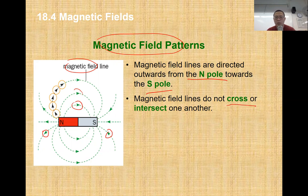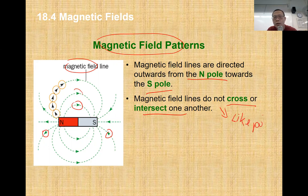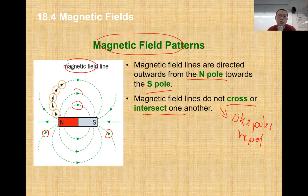We also make sure that the field line doesn't cross or intersect each other. One of the primary reasons it doesn't intersect is because the field lines represent where the North Pole or South Pole effects are being felt. The common understanding is that like poles repel. Because each field line represents a pole - from North Pole to South Pole - you'll find that like poles tend to repel each other, so the chances of them crossing each other is virtually zero.